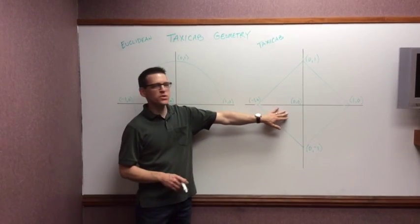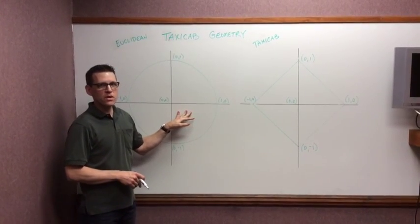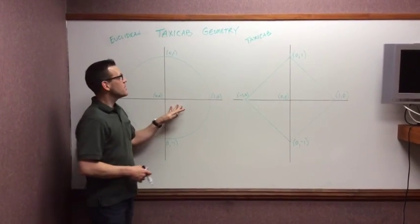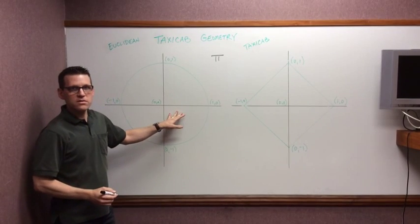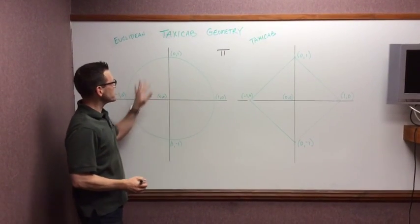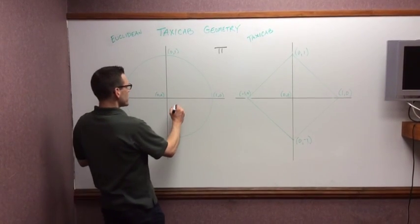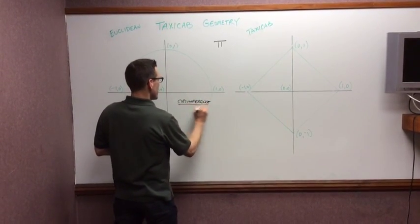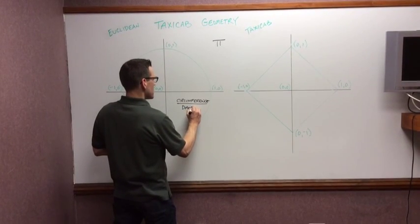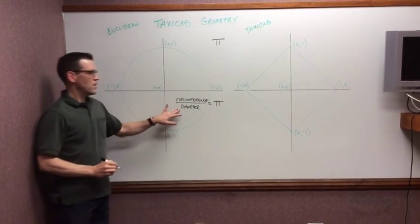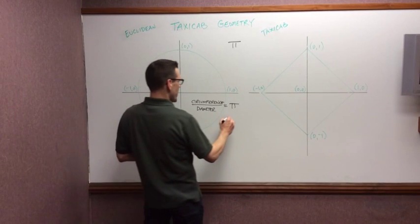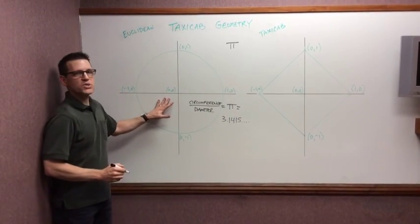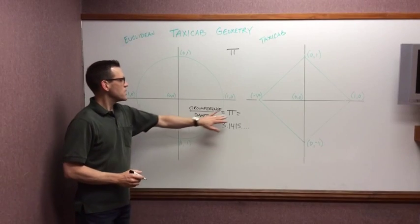We've seen how a Taxi Cab circle looks a little bit different from an Euclidean circle. But let's examine another component of circles, that constant that we call pi. So remember that pi is simply a ratio. It's a ratio of the circumference of a circle to that circle's diameter. So I would write circumference divided by diameter equals pi. And we know in our experience with Euclidean circles that pi is equal to about 3.1415... So no matter how big my circle is, this relationship holds. And that's how pi is defined.